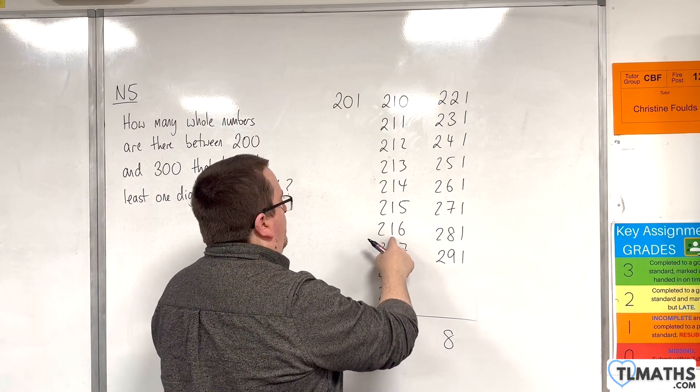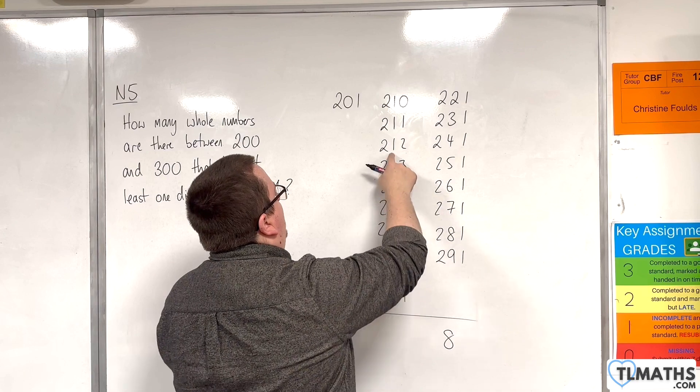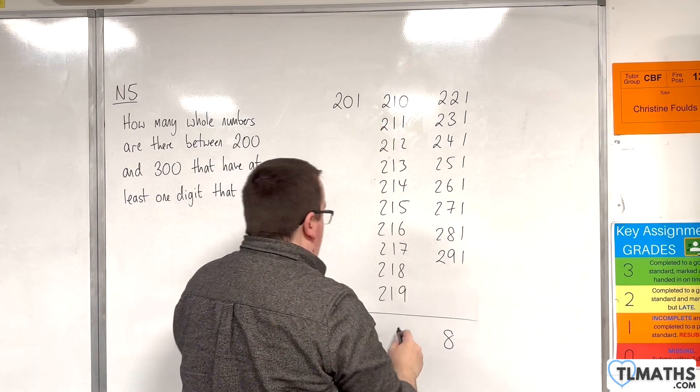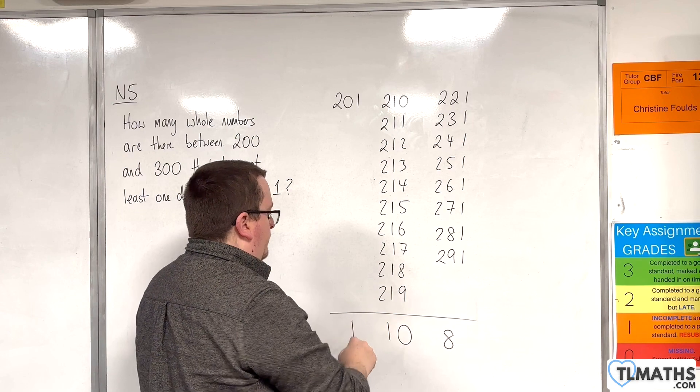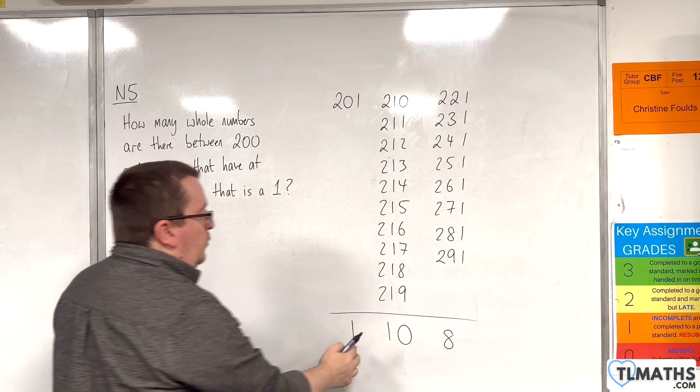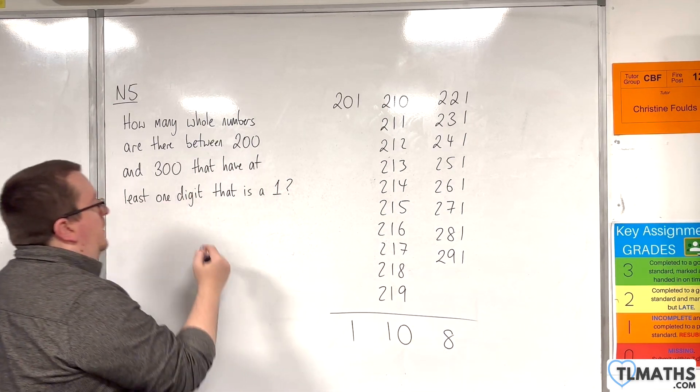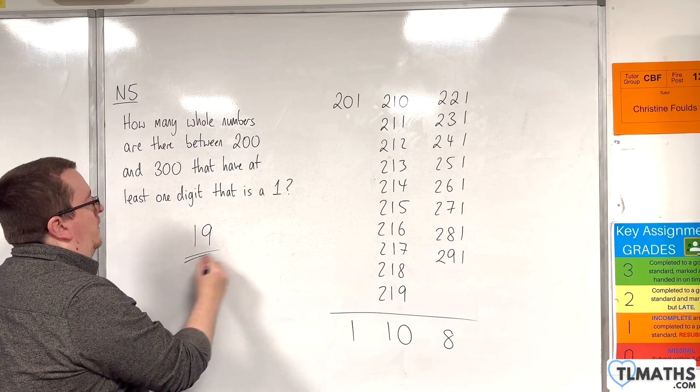We've got 1, 2, 3, 4, 5, 6, 7, 8, 9, 10 there. So in total, we've got 1 plus 10 plus 8. So the answer is 19.